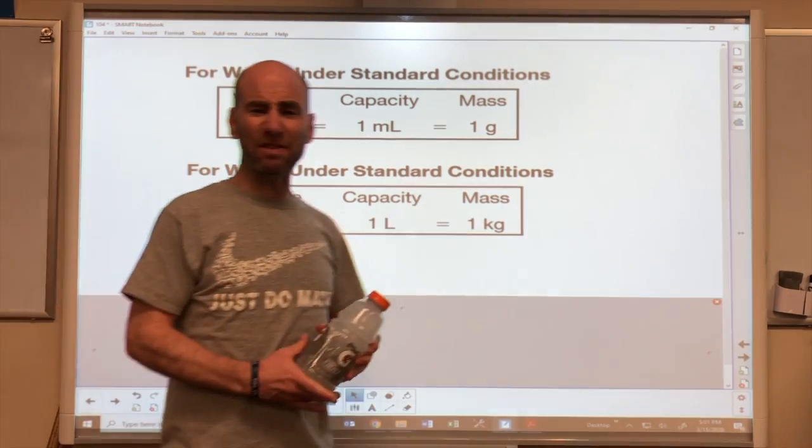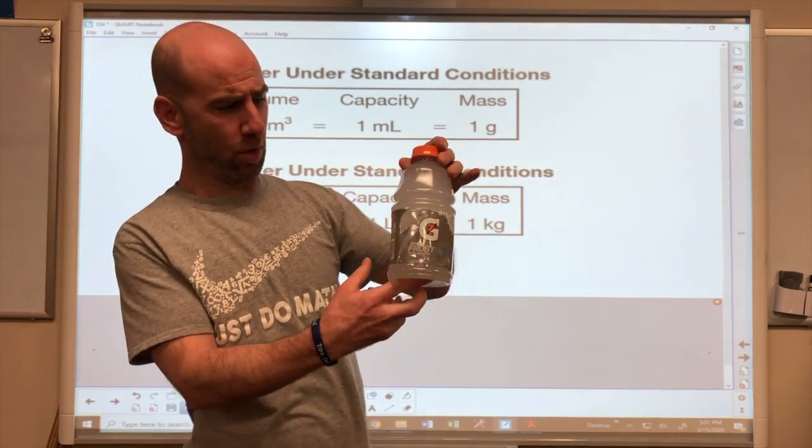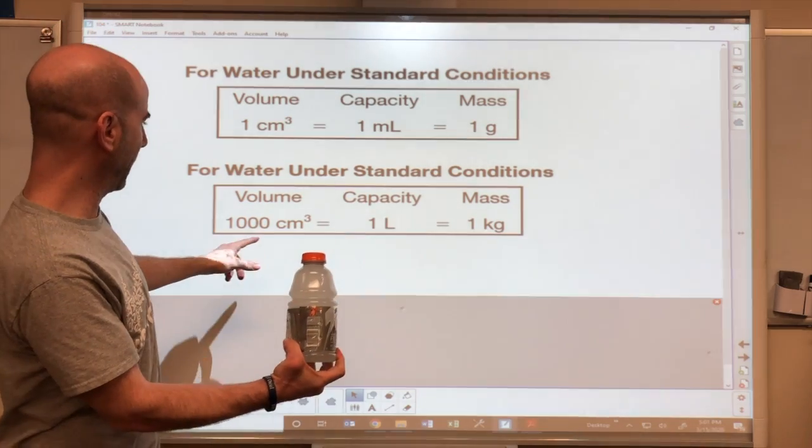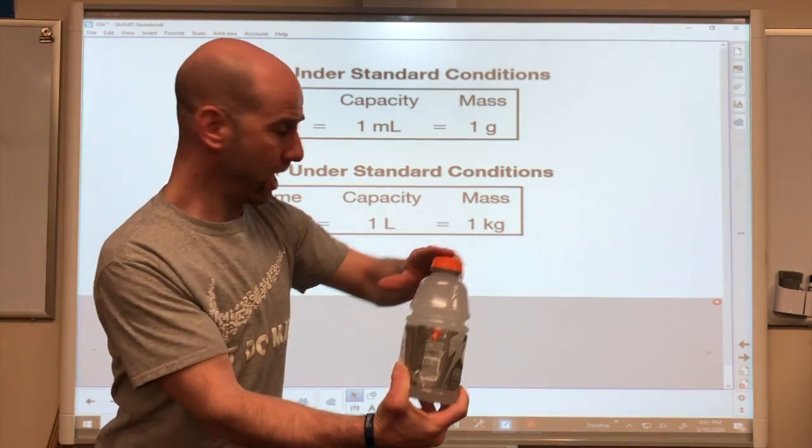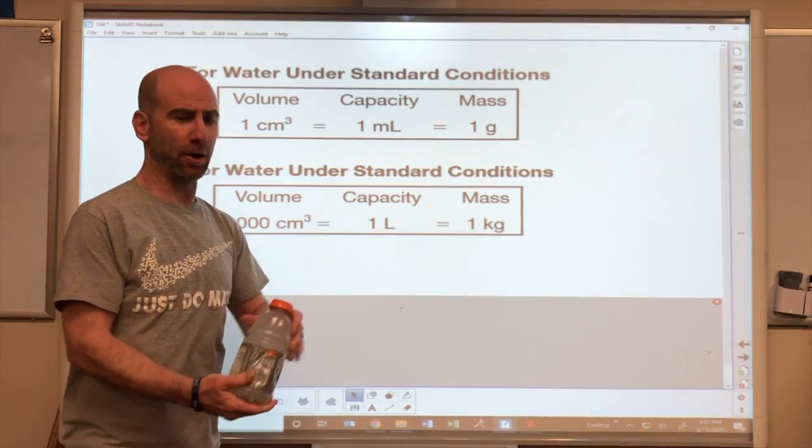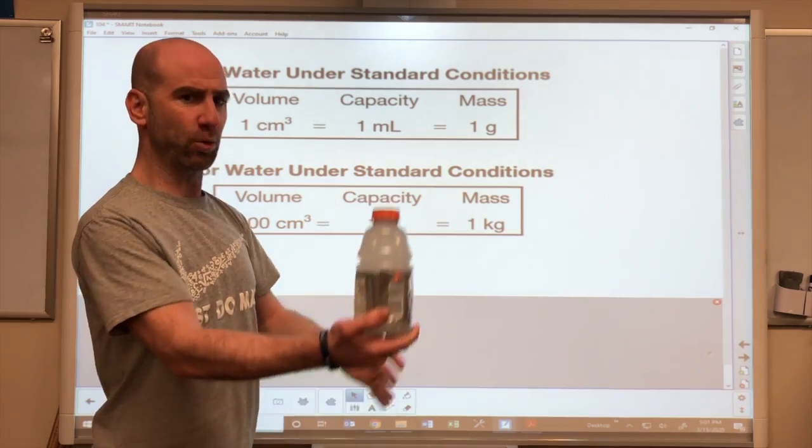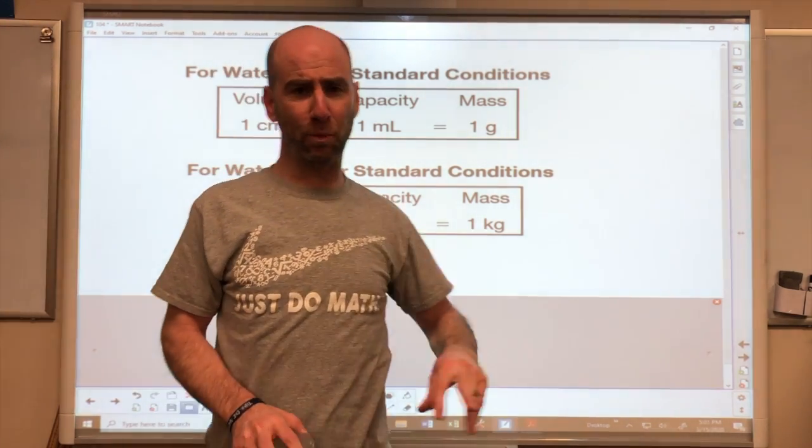To give you some perspective, this is almost a liter of water. So we're talking about this right there. So the amount of space in this bottle is about 1000 cubic centimeters. It holds a liter of water, and this weighs about a kilogram, which is about 2.2 pounds.